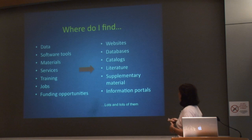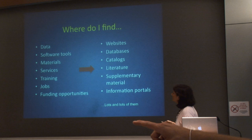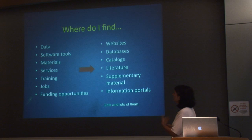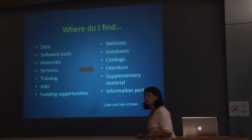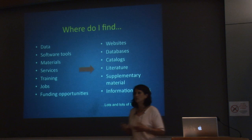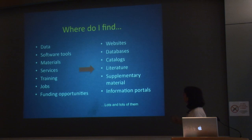Why is NIF necessary? Basically, what is it that I find on the web? I go there to find data, software tools, materials, services. I want to get an antibody produced, a transgenic animal produced, data stored. I need training in something. I'd like to find a job, find funding opportunities. This is what we're defining very broadly as a resource—basically anything that somebody needs to do their job or to do something in particular.